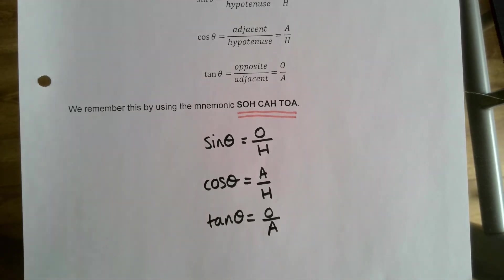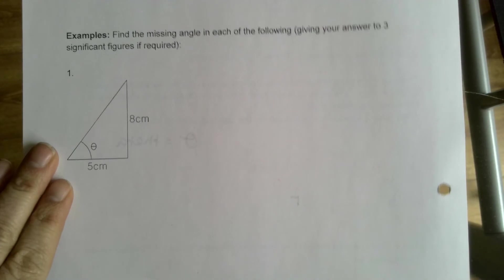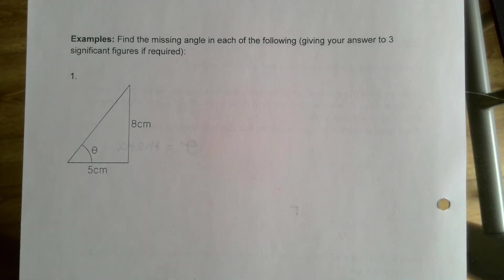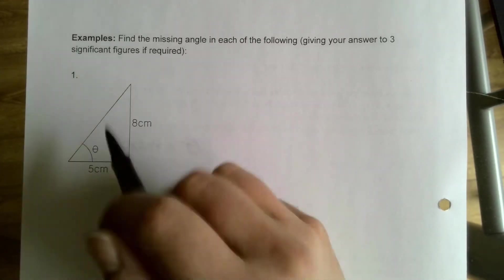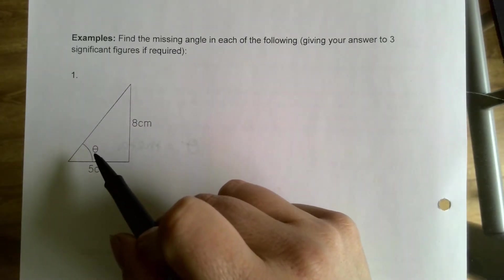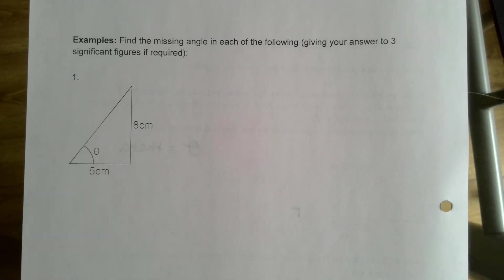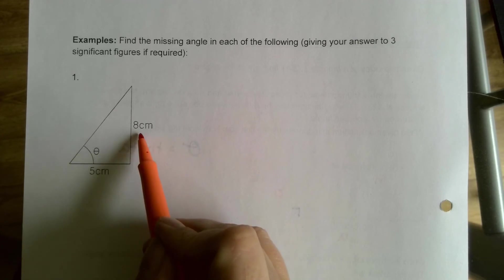There are two examples in your notes that we're going to work through using these rules before you try the classwork. For today, all I want us to focus on is finding missing angles. The first question asks us to find the missing angle and give the answer to three significant figures. The first thing we need to do is label our triangle. The angle they've given us lets us label the 8 cm side as the opposite.